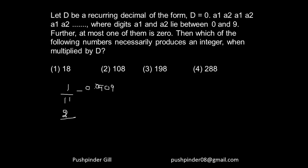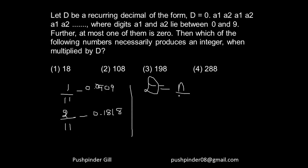Similarly, 2 by 11 is nothing but 0.18181818 and so on. 3 by 11 is also 0.272727 and so on. That means this number d must be a number divided by 11.